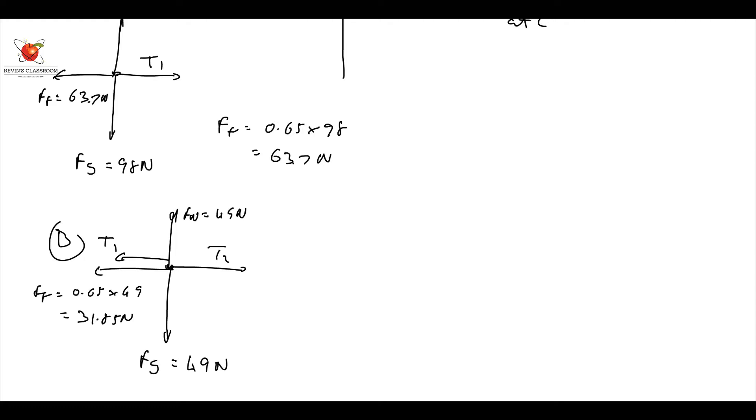the last one is for C, which is my hanging mass. I'd say FG down is going to be equal to 9.8 times M. Why? Because I do not know the value of the mass at this stage.